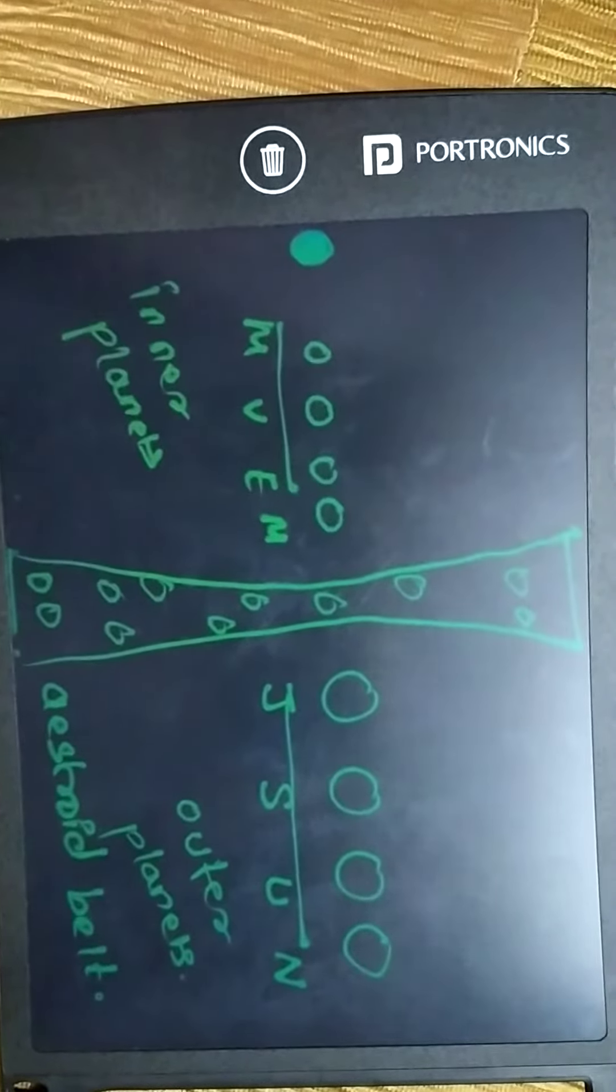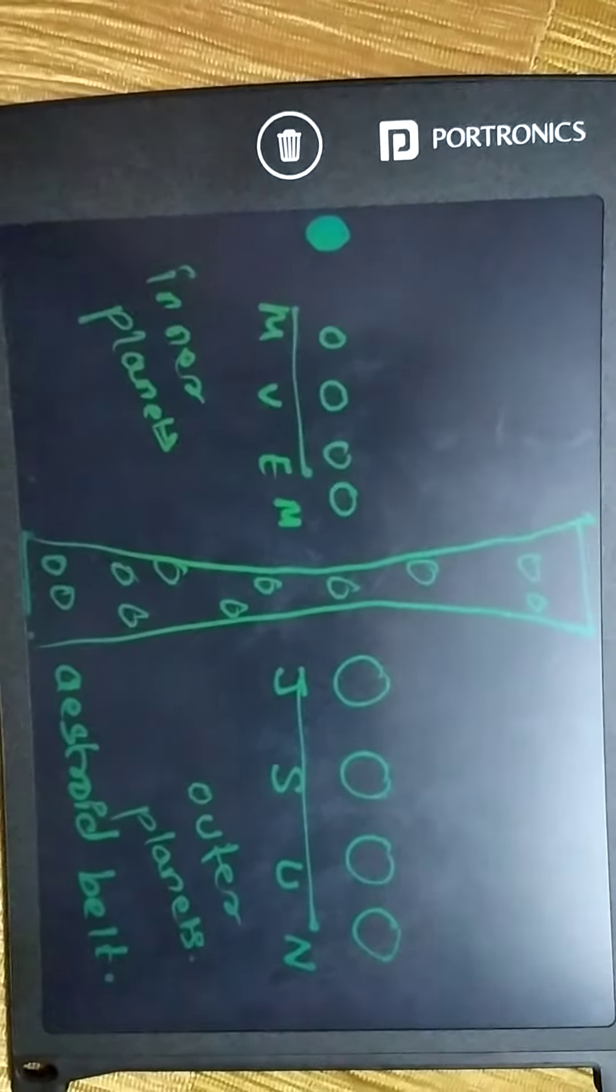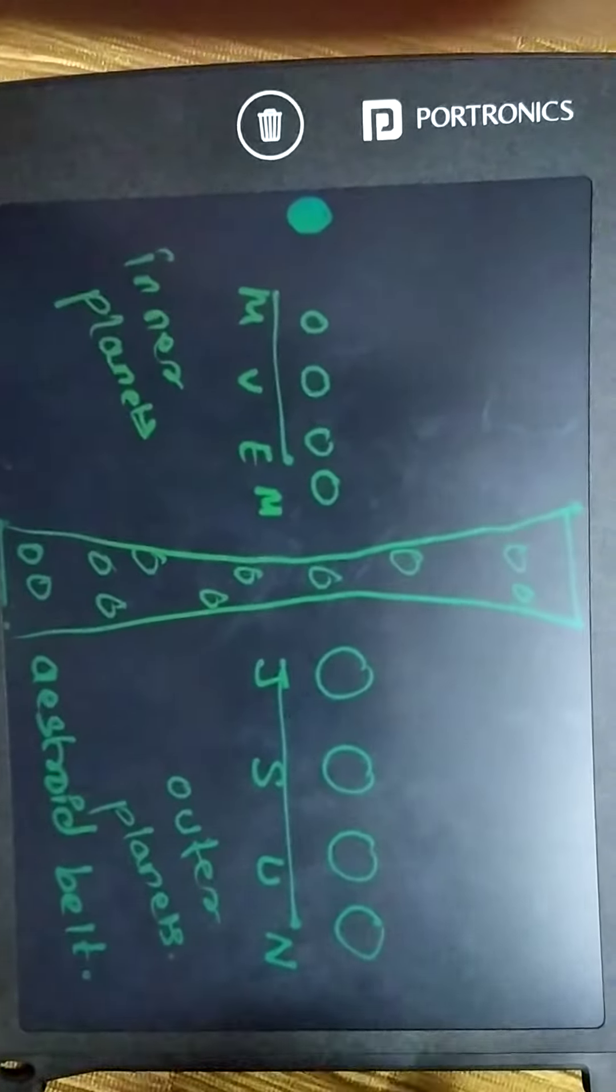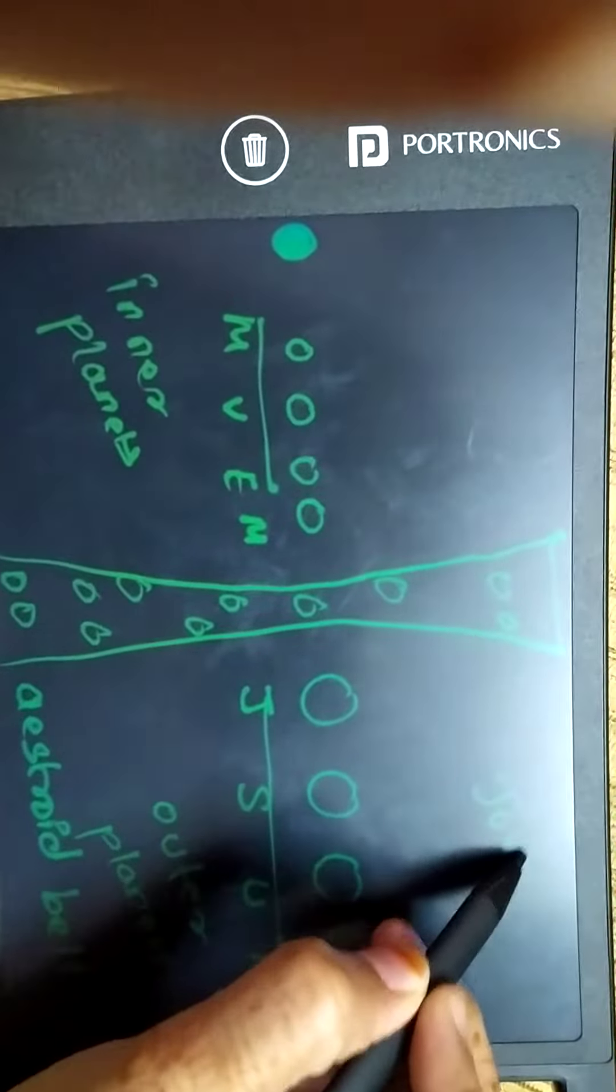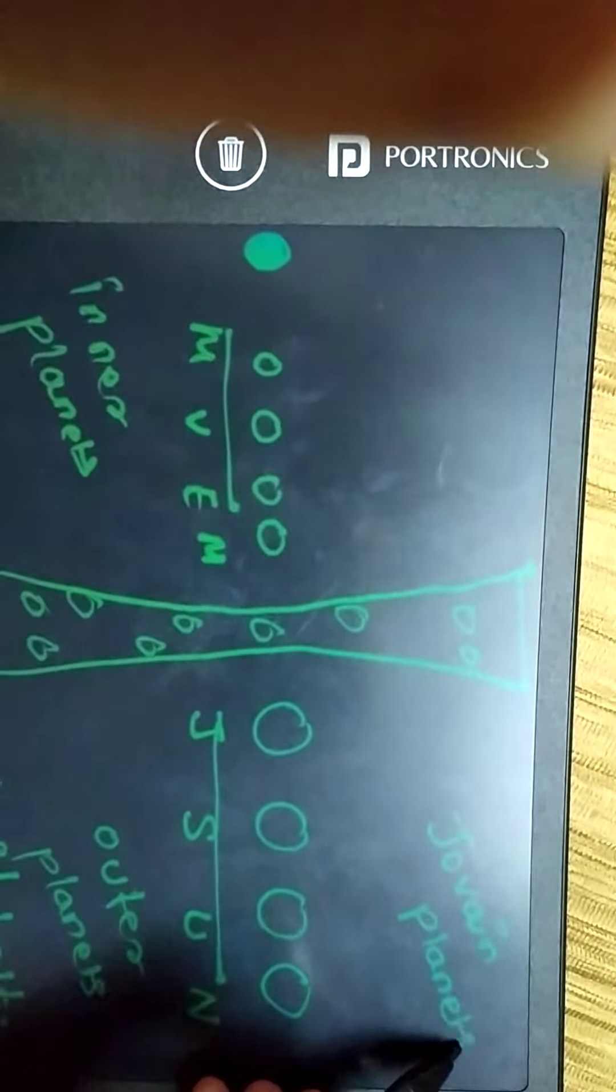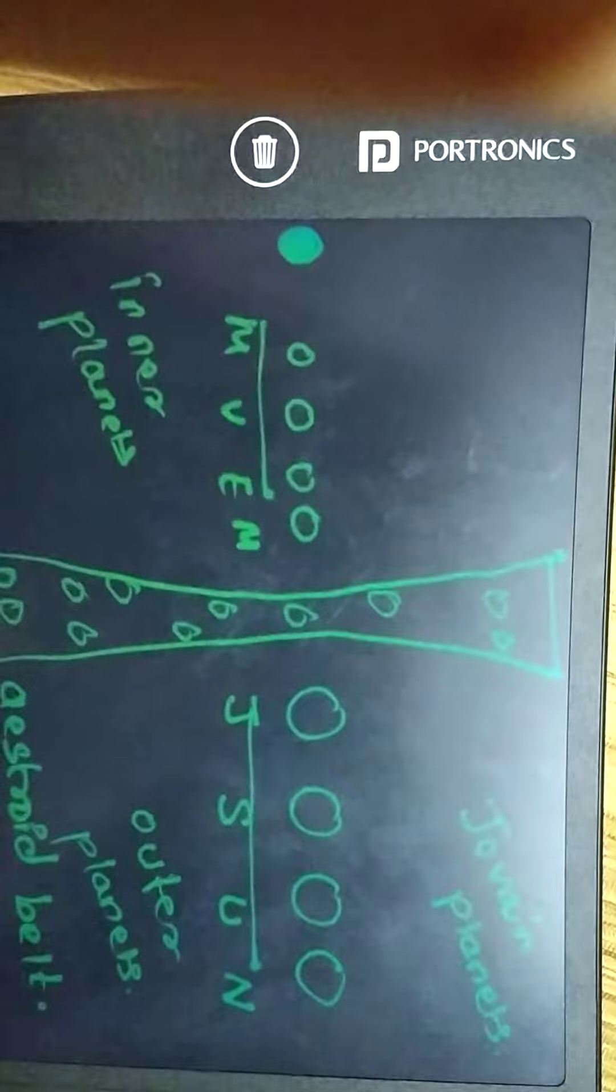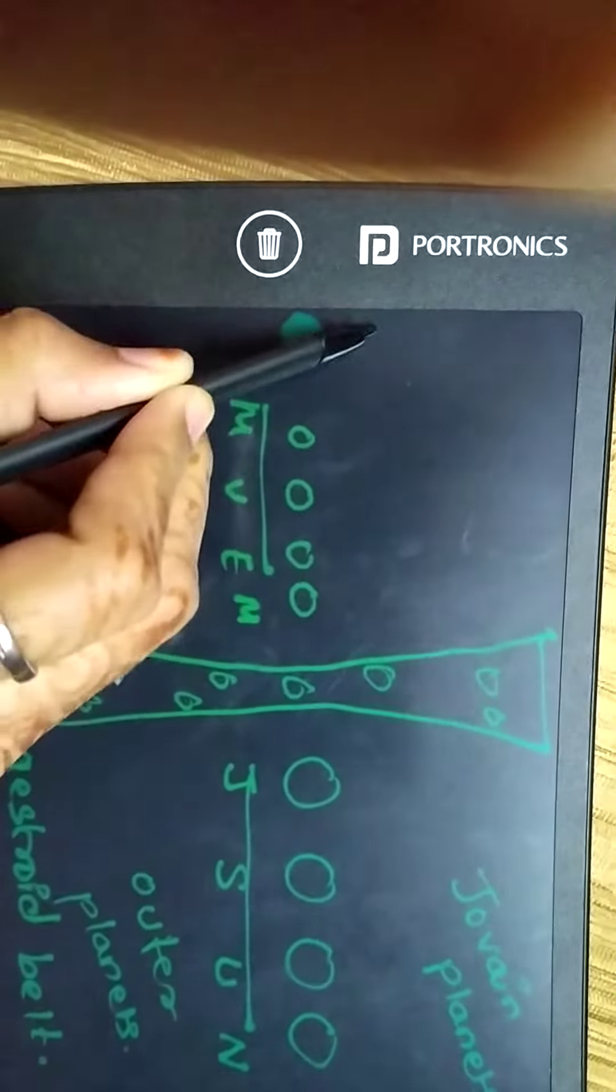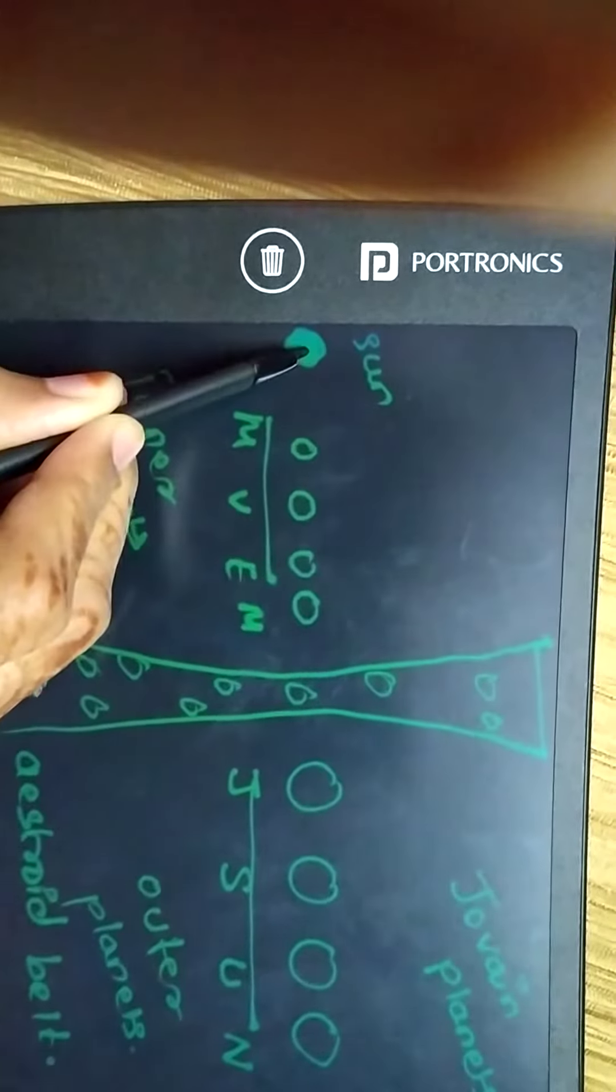Hello everyone, in this video we are going to learn what are terrestrial planets and what are gaseous planets or Jovian planets. The outer planets are known as Jovian planets because they look like Jupiter and they are far away from the Sun.